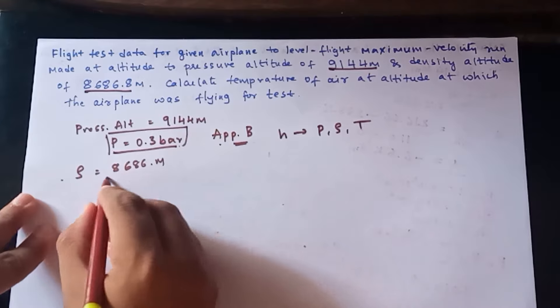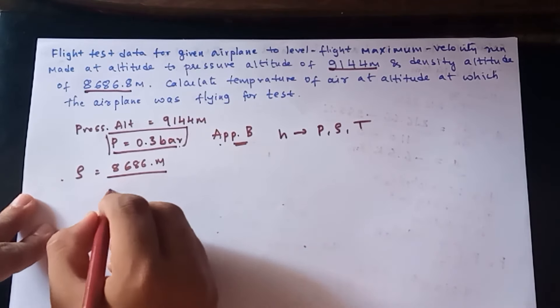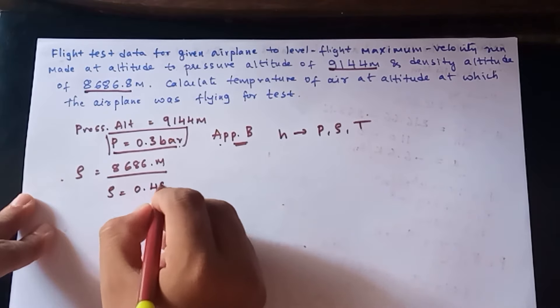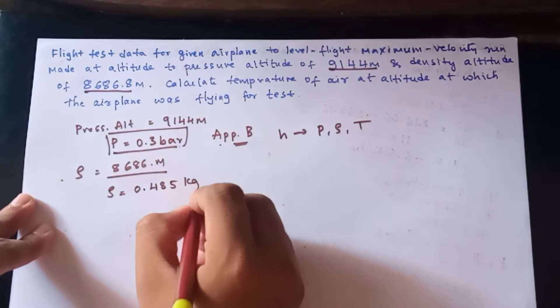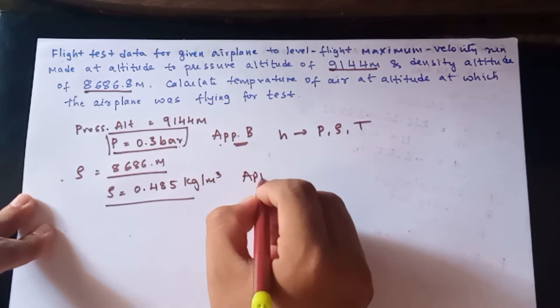For 8686 meters, the density will be 0.485 kg per meter cube. This is also from Appendix B.